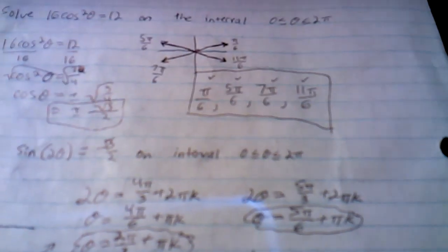All right, we're going to solve sine of 2 theta equals negative square root 3 over 2 on the interval of theta is greater than or equal to 0 and less than or equal to 2 pi.